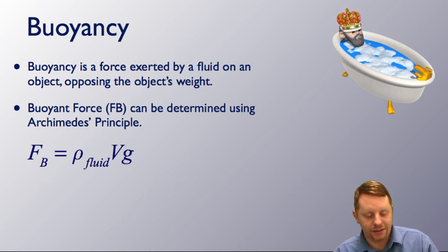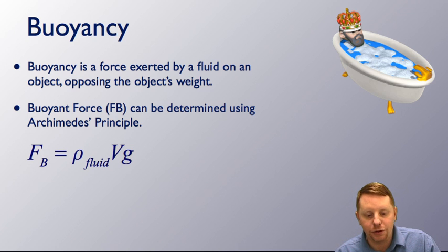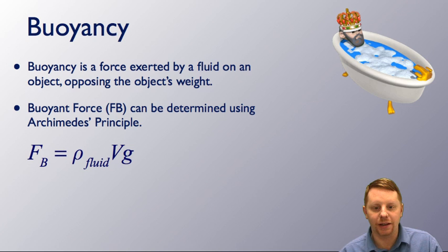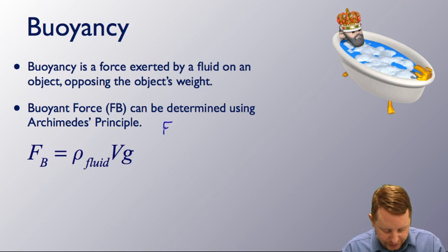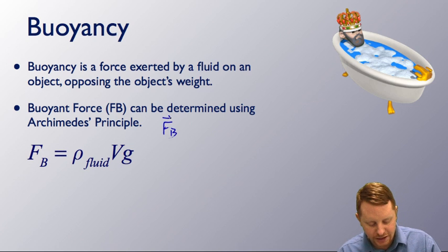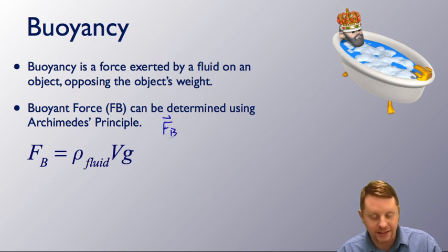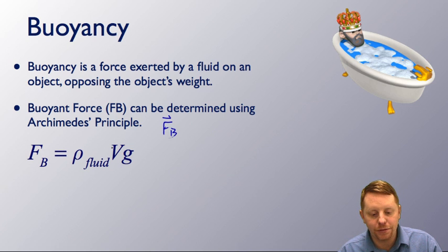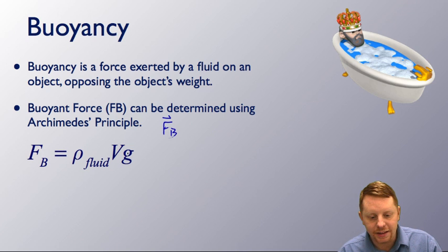That leads us to buoyancy. Buoyancy is a force exerted by a fluid on an object that opposes the object's weight. The buoyant force, Fb, is a vector and can be determined using Archimedes' principle: the buoyant force equals the density of the fluid times the volume of fluid displaced times g, the acceleration due to gravity.